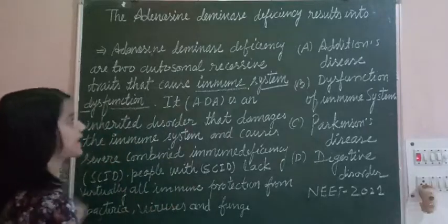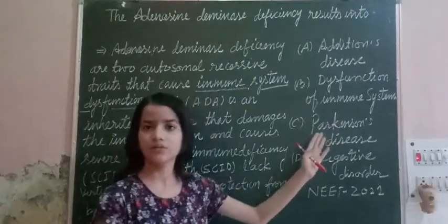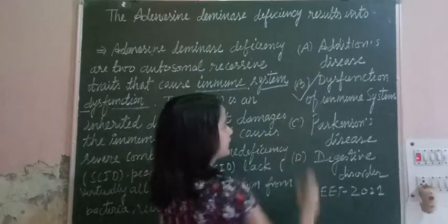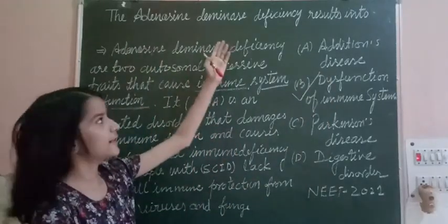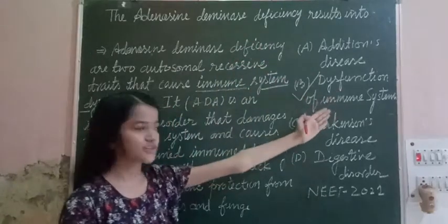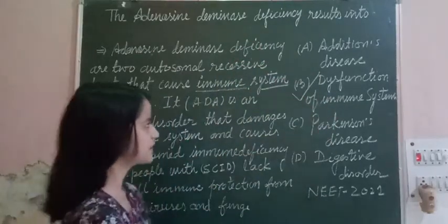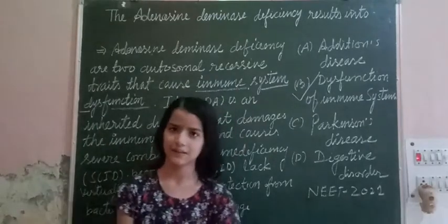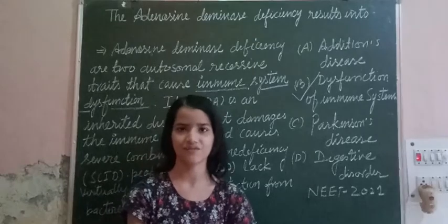So, after reading this, our answer is dysfunctional immune system. The adenosine deaminase deficiency results in dysfunction of the immune system. I hope you got the answer to this question. If you like my channel, please subscribe and share with your friends. Thank you for watching.